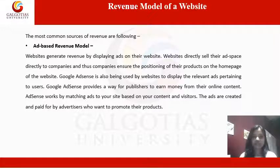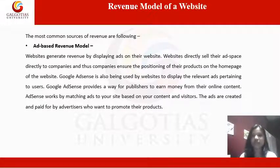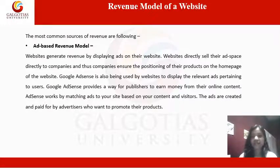Now I am going to discuss about the revenue model of new media. The most common source is the ad-based revenue model. Websites generate revenue by displaying ads on their website, either by directly selling ad space to companies to ensure positioning of their products on the homepage, or by using Google AdSense to display relevant ads pertaining to users. Google AdSense provides a way for publishers to earn money from their online content by matching ads to your site based on your content and visitors. The ads are created and paid for by advertisers who want to promote their products.